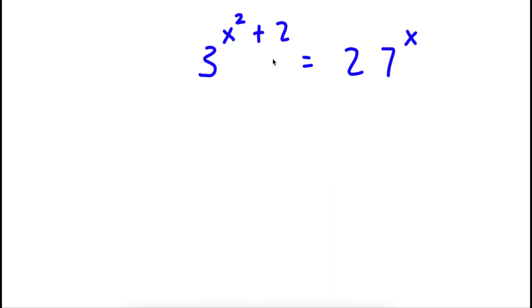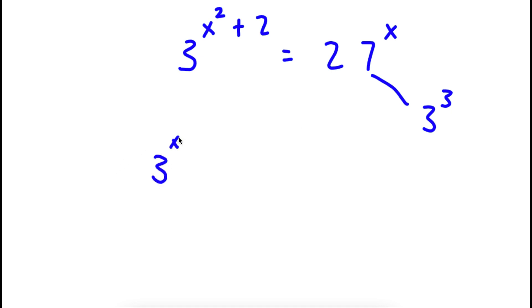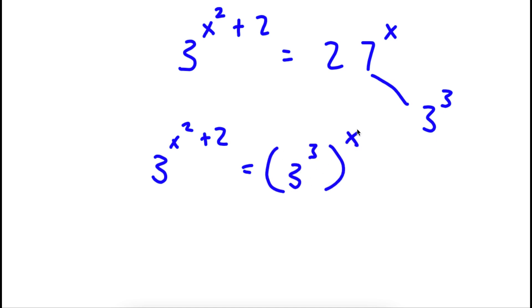So I have 3 to the power of x squared plus 2 is equal to 27 to the power of x. The first thing I'm going to do is change 27 to 3 to the power of 3, because 27 is equal to 3 to the power of 3. So substituting in, I get 3 to the power of x squared plus 2 is equal to 3 to the power of 3 to the power of x.